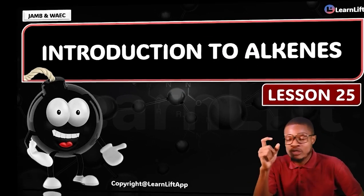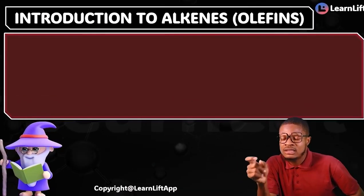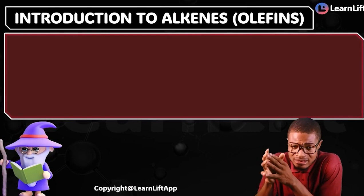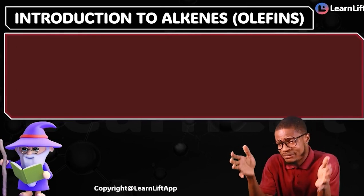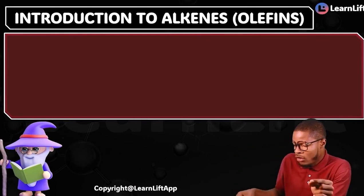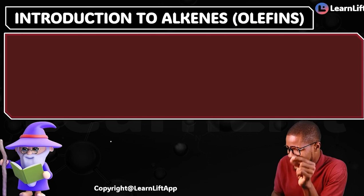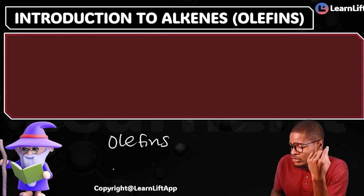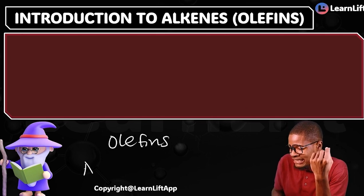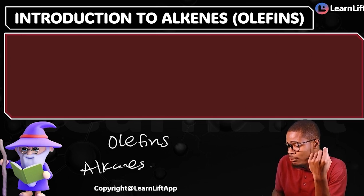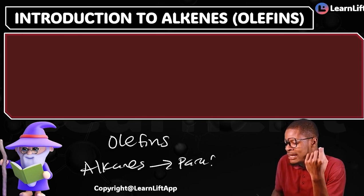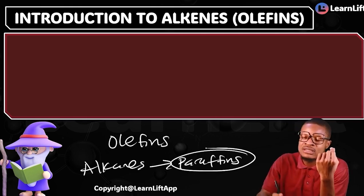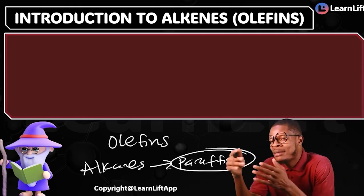The first thing you're going to know about alkanes is that alkanes are also called olefins. We have established that alkanes are paraffins. Alkanes are olefins. I told you that alkanes — the ones with single bonds — they are called paraffins. And we said that the word paraffins is gotten from the word 'param affinis.'